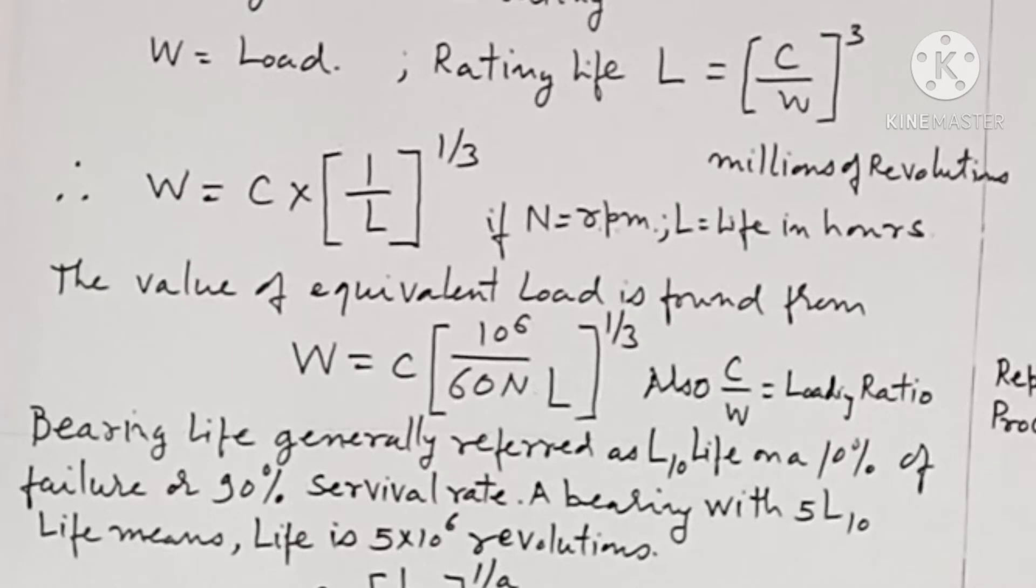Rating life L is defined as L equals C over W raised to the power 3, in millions of revolutions. Therefore, W equals C times 1 over L to the power 1/3, if N equals RPM and L equals life in hours.